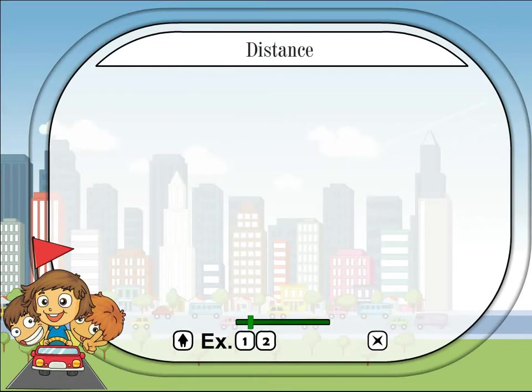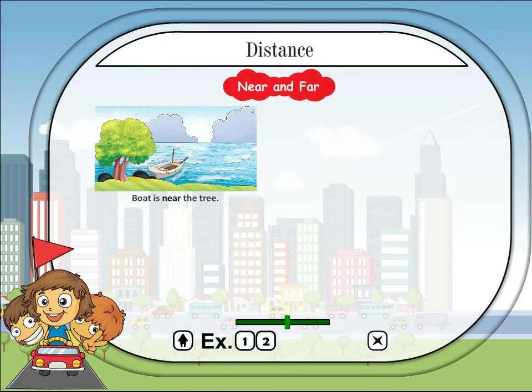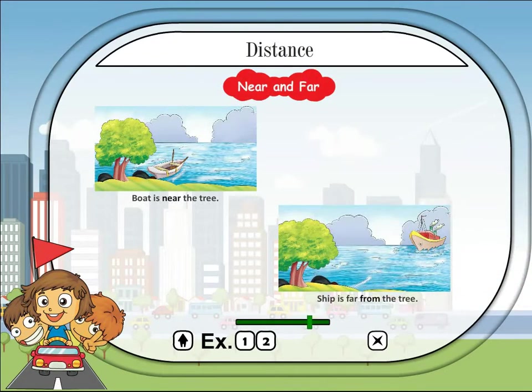Distance: near and far. The boat is near the tree. The ship is far from the tree.